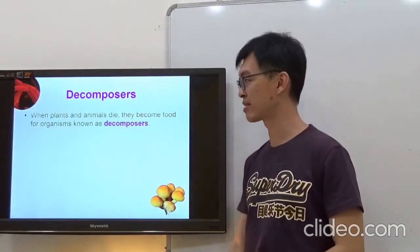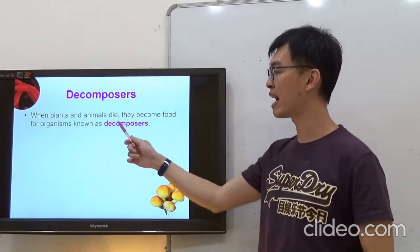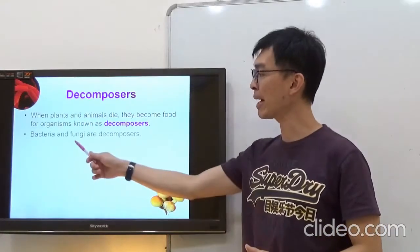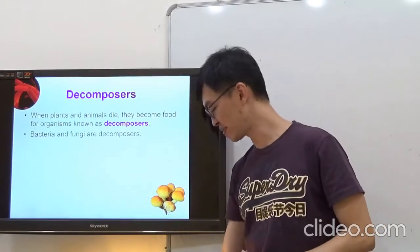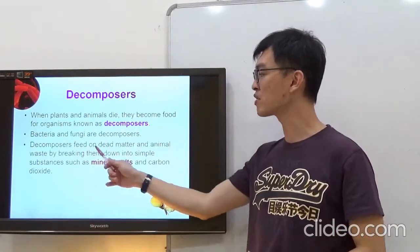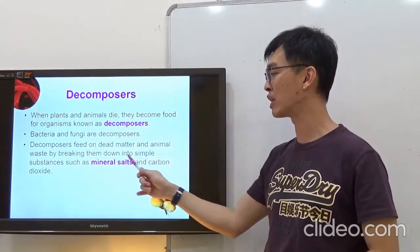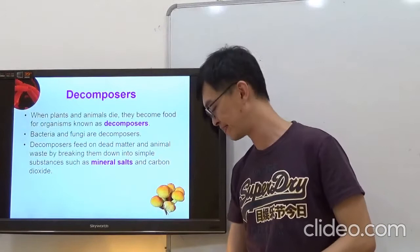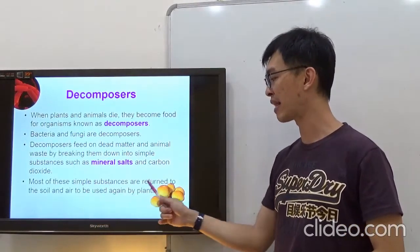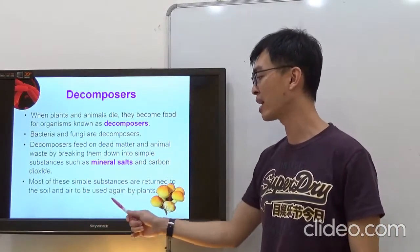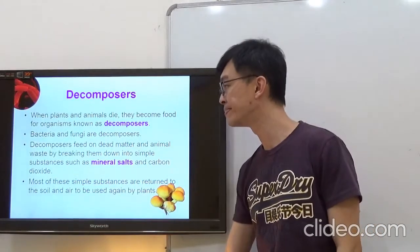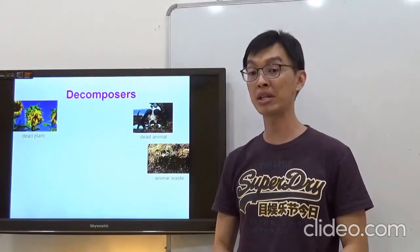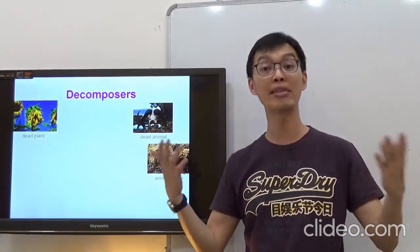Now, we're going to talk about decomposers. When plants and animals die, they become food for organisms known as decomposers. Bacteria and fungi are decomposers. Decomposers feed on dead matter and animal waste by breaking them down into simpler substances such as mineral salts and carbon dioxide. Most of these simpler substances are returned to the soil and air to be used again by plants.